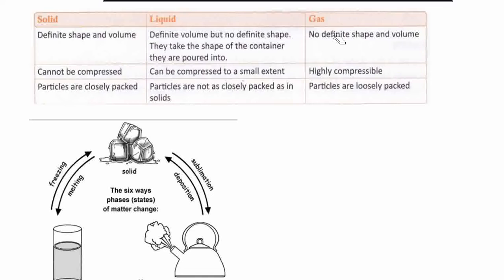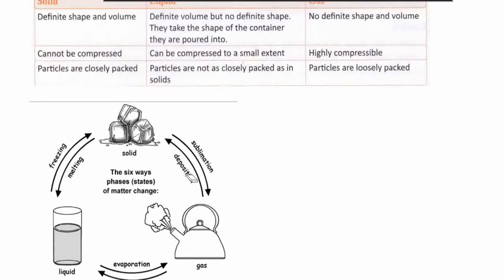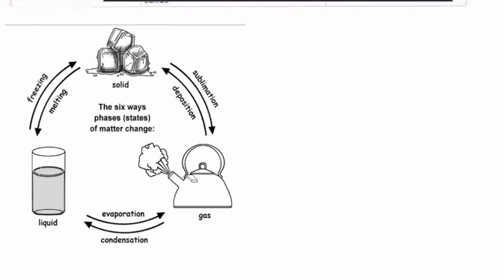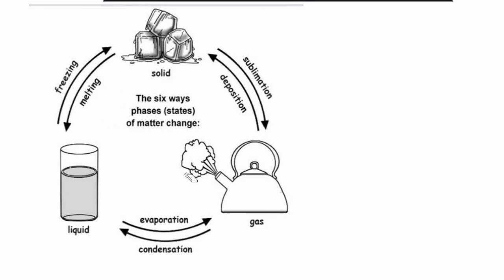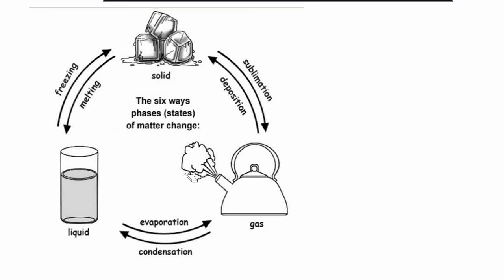Gas has no definite shape and volume. This is water vapor in the gaseous state. It is highly compressible and particles are loosely packed. The processes of state change are: melting, freezing, evaporation, condensation, deposition, and sublimation.